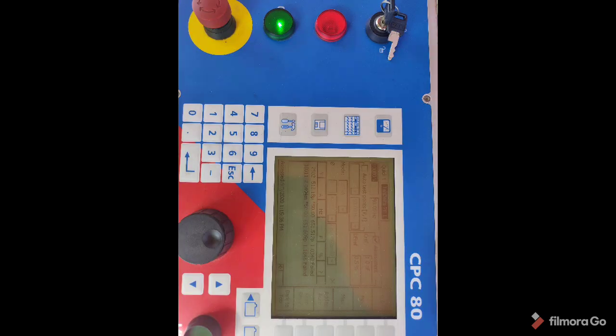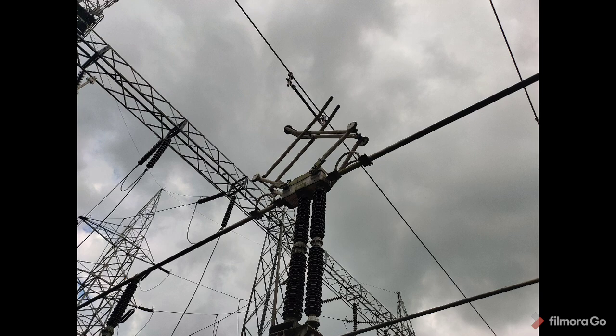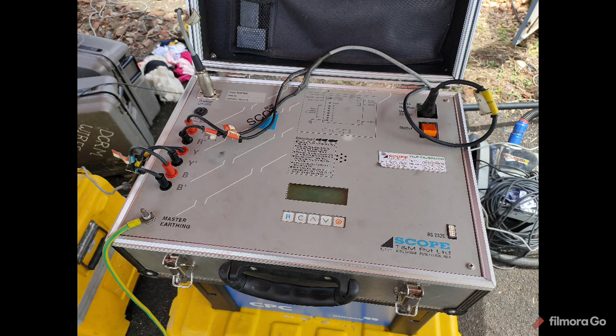This is the 220 kV pantograph type isolator, this is the cycle test machine with connections, this is the Tan Delta machine display connection, and you are seeing lots of equipment.